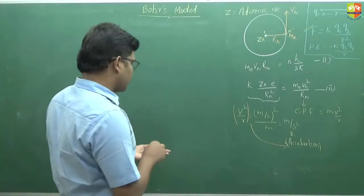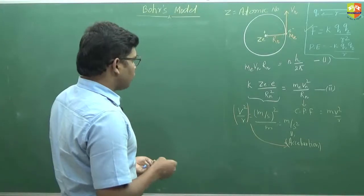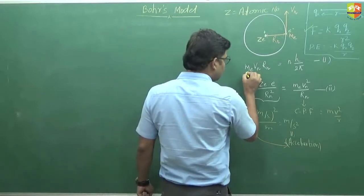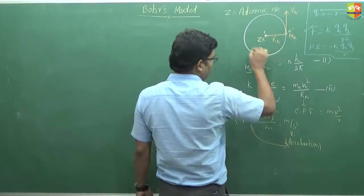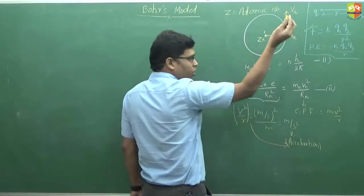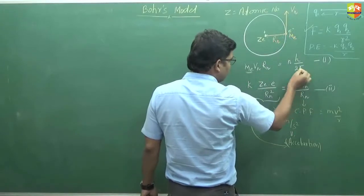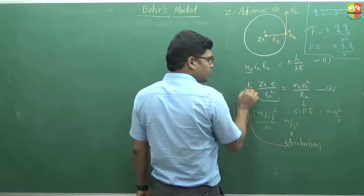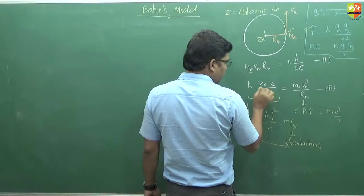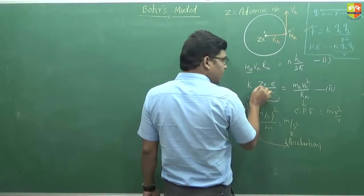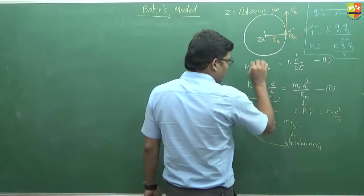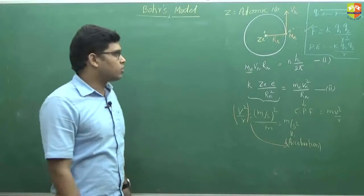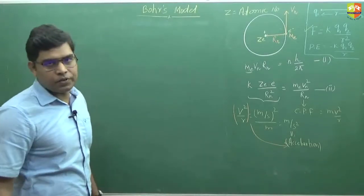Now you see these two equations — what are the unknowns we have. Mass of electron we know, n value is the number of orbit, h value we know, pi we know, k value we know — it is a Coulomb's law constant. Z is the atomic number, that also we know. So if you see these two equations, there are only two unknowns: that is velocity and radius.